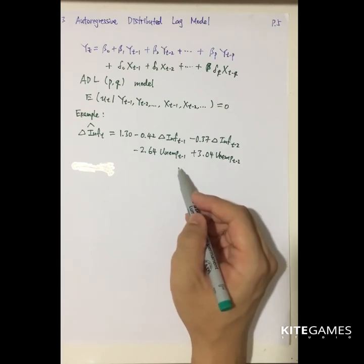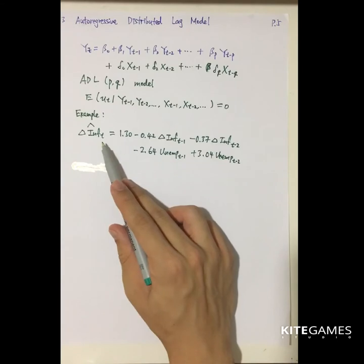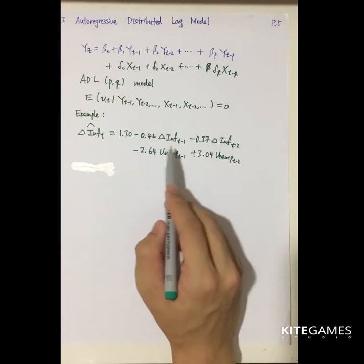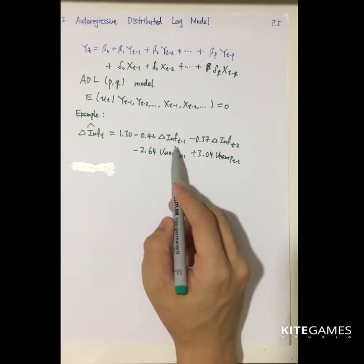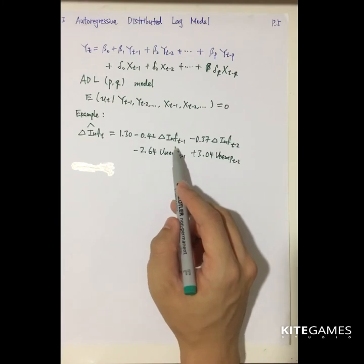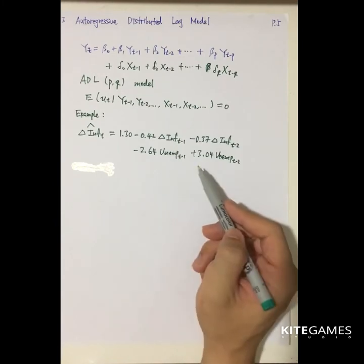Then in the next period it will decrease, and is also some function of unemployment rate. So that means that inflation rate is not only a function of previous inflation rate, but previous unemployment rate.